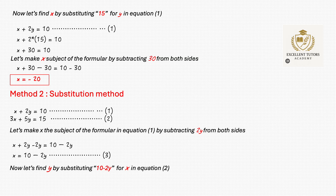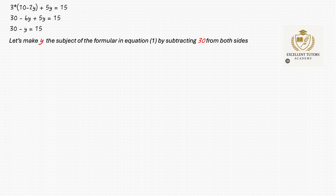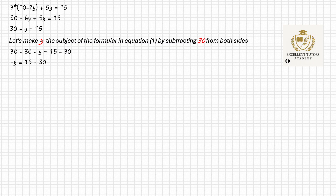Now let's find y by substituting 10 minus 2y for x in equation 2. So 3 times (10 minus 2y) plus 5y equals to 15, giving us 30 minus 6y plus 5y equals to 15, which simplifies to 30 minus y equals to 15. Subtracting 30 from both sides: minus y equals to 15 minus 30, so minus y equals to minus 15.